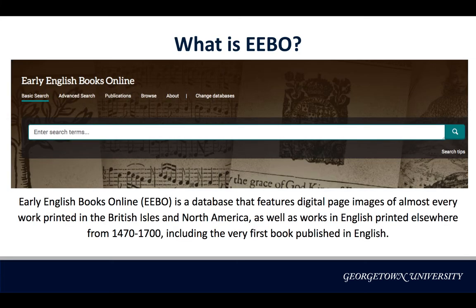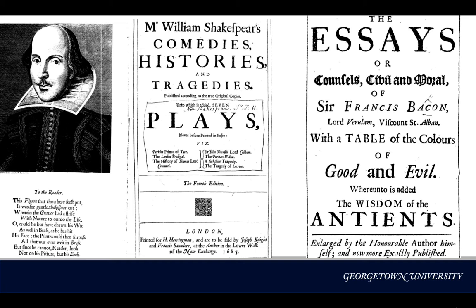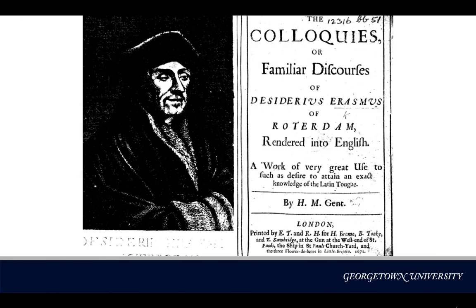EEBO features over 22 million digital page images of almost every work printed in the British Isles and North America, as well as works in English printed elsewhere from 1470 to 1700. Included in EEBO are works by Shakespeare, Bacon, Galileo, and Erasmus, to name but a few.